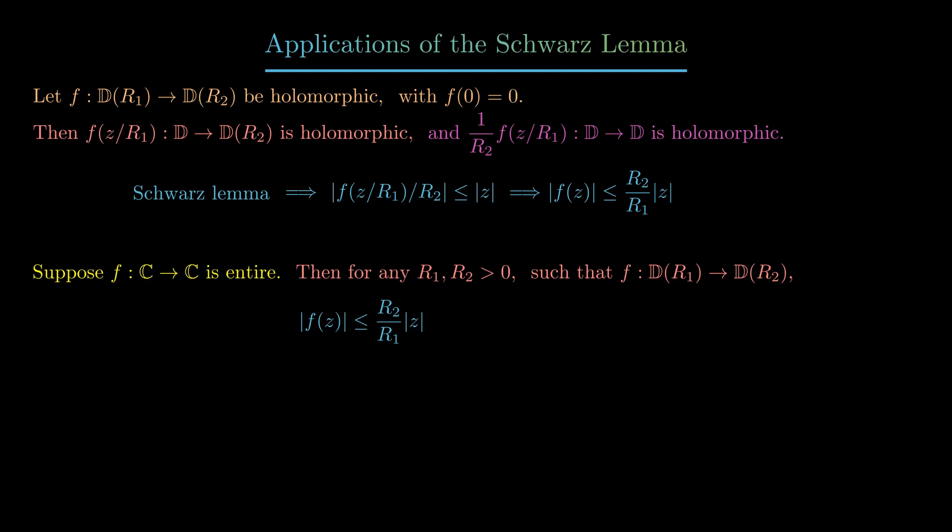We can take r1 to be arbitrarily large since this is just the disk in the domain, and since f is holomorphic everywhere, we can essentially take this disk to be infinite. But that then tells us that the absolute value of f(z) is zero, and we arrive at the famous Liouville theorem saying that a bounded entire function has to be constant.